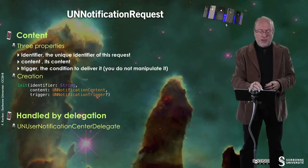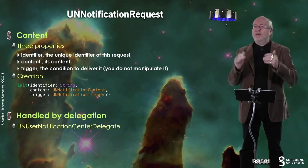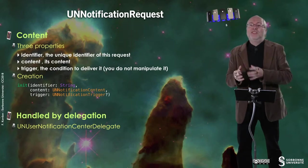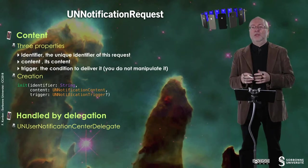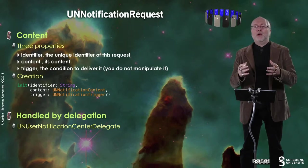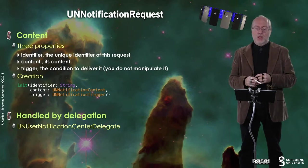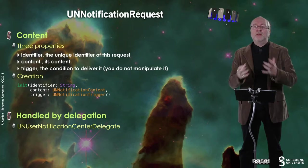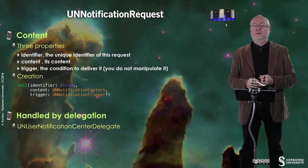A UN notification request has basically three properties: an identifier, which is a unique identifier of this notification request; a content, which is its content; and a trigger, which is a condition to deliver. Usually you don't manipulate it directly, and the trigger has a big importance for push notification. When you create it, you use an init method where you provide all of these, and you can provide a nil condition very easily. And of course it's handled by delegation, thanks to the UN User Notification Center Delegate Protocol.